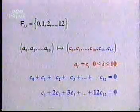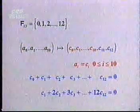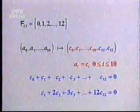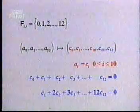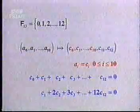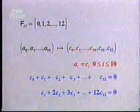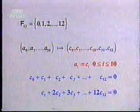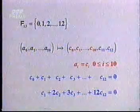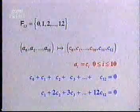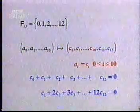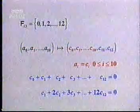And if we take each symbol multiplied by the number of its location and we add all these, the sum should again equal 0. These two equations determine the final two symbols.